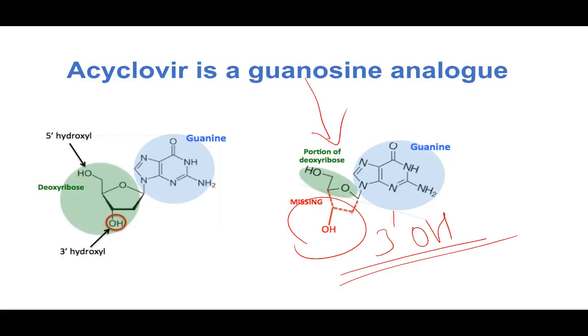If you incorporate guanosine into the growing DNA, the chain will get terminated. This will cause chain termination. We have already studied that dideoxynucleotides used in Sanger DNA sequencing also cause chain termination.